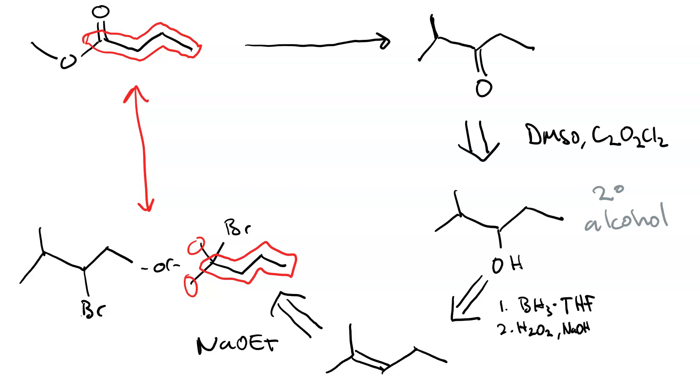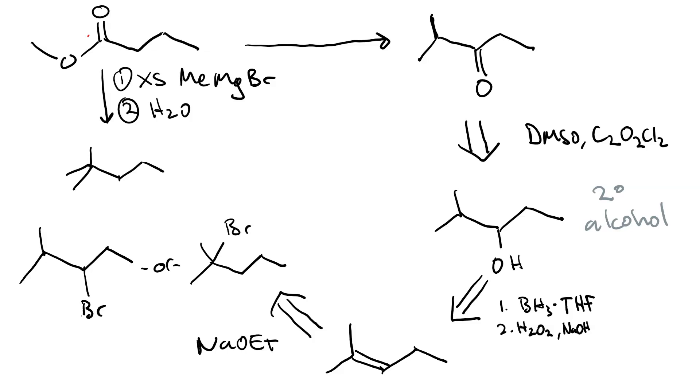So, now it's time to start thinking forwards. So, if we used our excess methyl magnesium bromide followed by water, we'd end up with this tertiary alcohol, which we could then get to the alkyl bromide by using PBr3. What's really cool is we could even skip a step and go directly to that alkene if we did acid-catalyzed dehydration. So, concentrated sulfuric acid and heat.